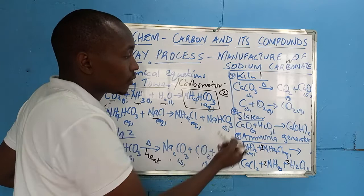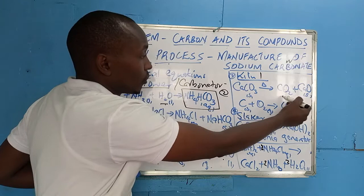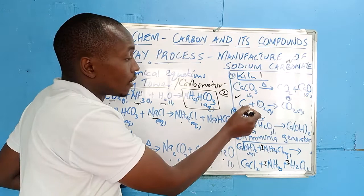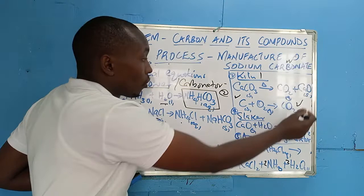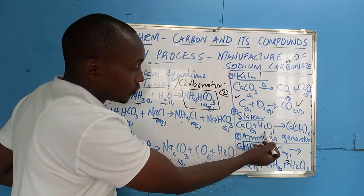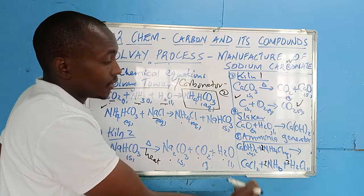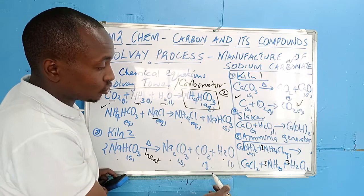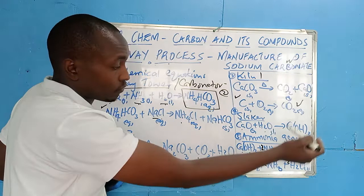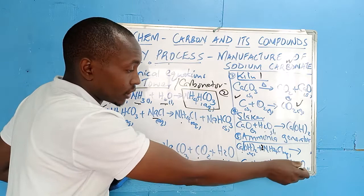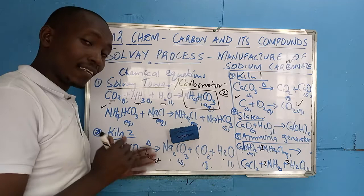In kiln number one, calcium carbonate (limestone) decomposes to give calcium oxide and carbon dioxide. Also in kiln one, cork — which is carbon — reacts with oxygen to produce more carbon dioxide. In the slaker, calcium oxide reacts with water to form slaked lime, calcium hydroxide. Then in the ammonia generator, calcium hydroxide reacts with ammonium chloride to give calcium chloride, ammonia, and water.